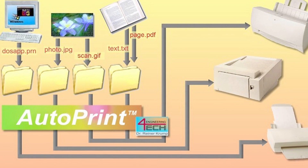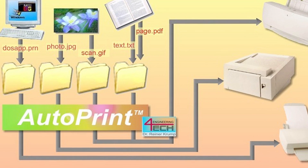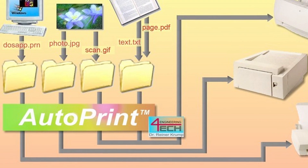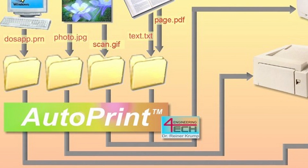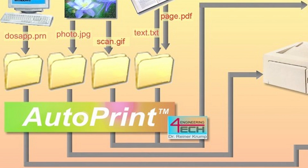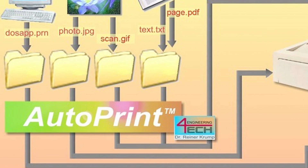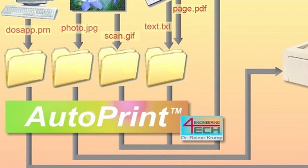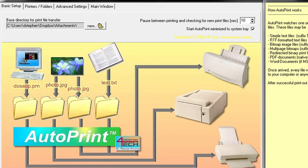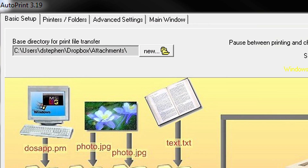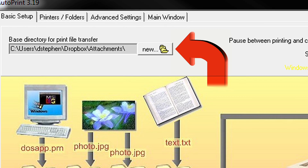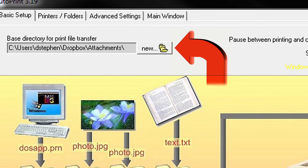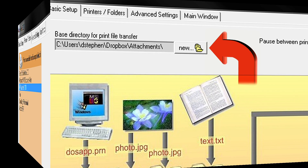Next, you will need to install the AutoPrint software. There are other softwares you can use to auto-print documents, but we have found AutoPrint to be the best solution. Once AutoPrint is installed, direct the software to watch files inside the Attachments folder created earlier within Dropbox.